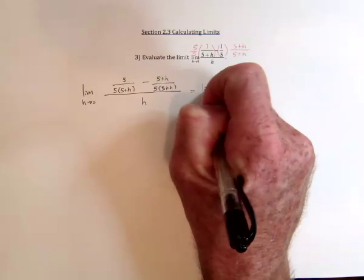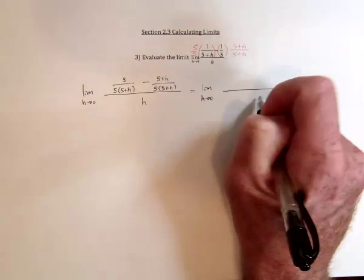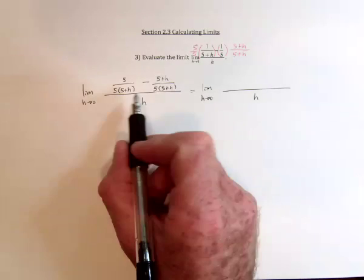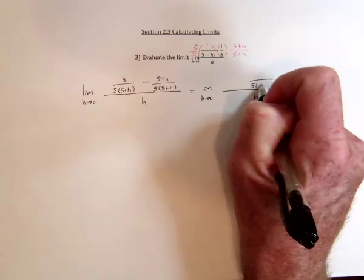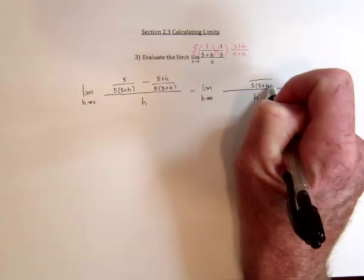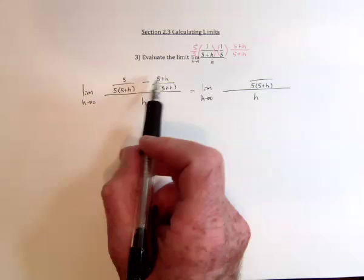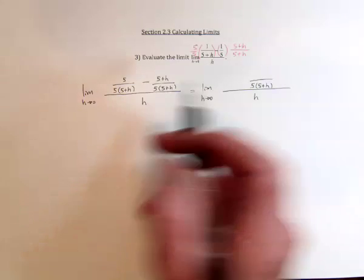So you've got the limit as h goes to 0 of a big fraction with an h in the denominator. And then combine these two so that they've got a common denominator of 5 times (5 plus h). And then the numerator is going to be 5 minus 5. They cancel. And then a negative applied to h.